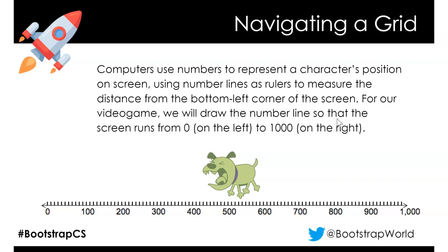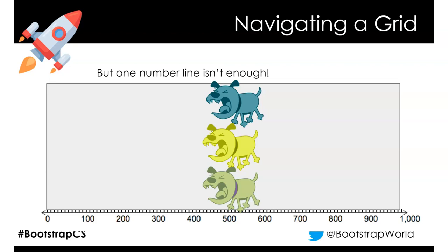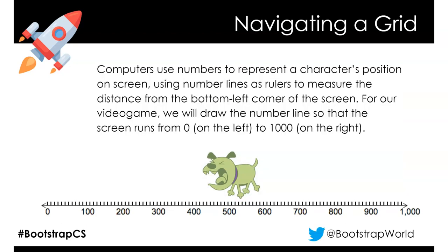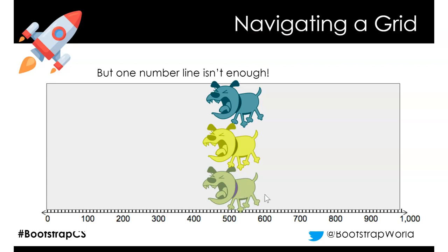We would draw a number line — this example uses 1,000 on the right, but the other examples use 640, so whoever made this slide didn't match the rest of them. It doesn't matter as long as you know your grid layout and what your game engine expects — you can use any grid layout you want. But what if one number isn't enough? If the character goes up and down, we'd need another axis.